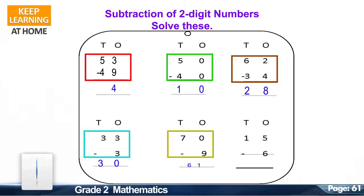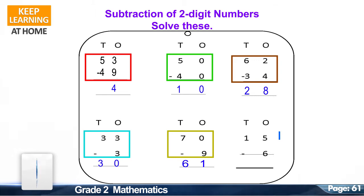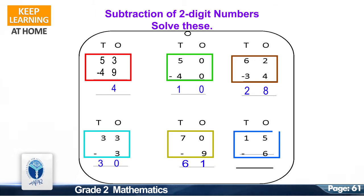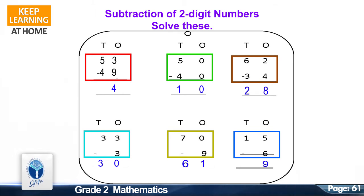Now solve the next question: 70 minus 9. The correct answer is 61. Now solve the last question: 15 minus 6. The correct answer is 9.